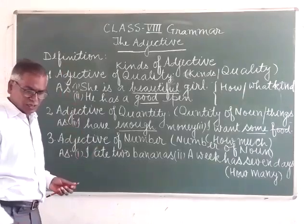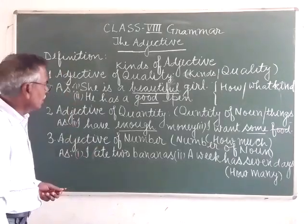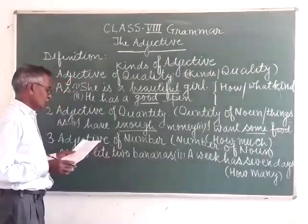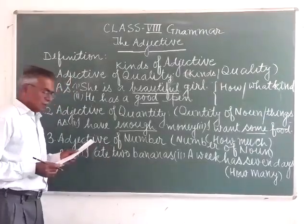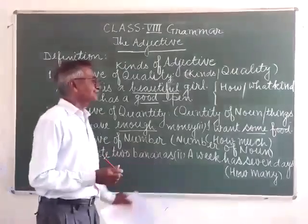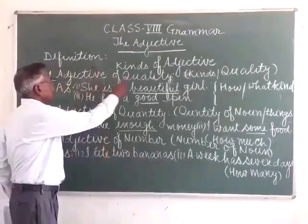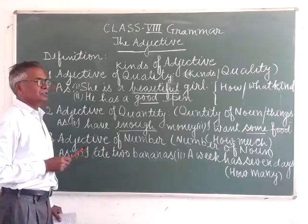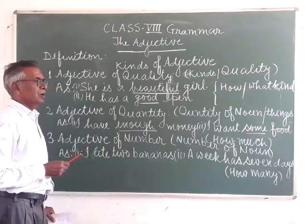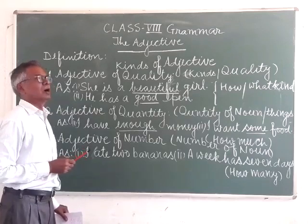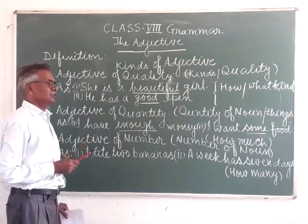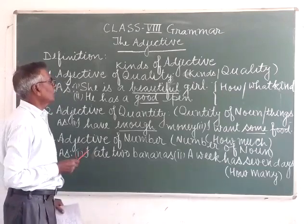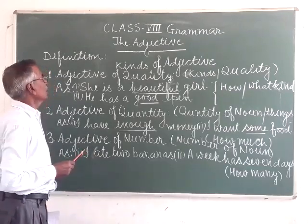Now we will look at examples of the adjective. Consider: 'Sila is a good girl,' 'I ate some mangos,' and 'Ramesh is a poor boy.' In these sentences, the words good, poor, and beautiful denote the adjective.